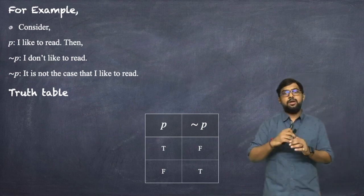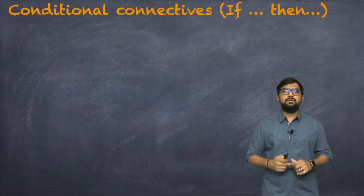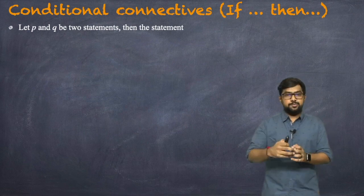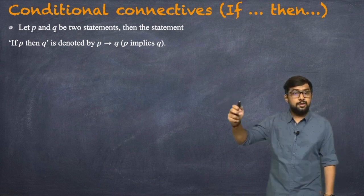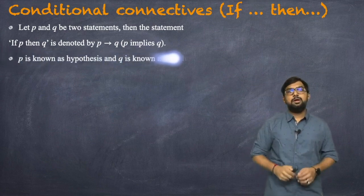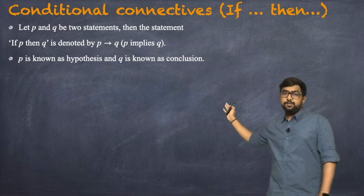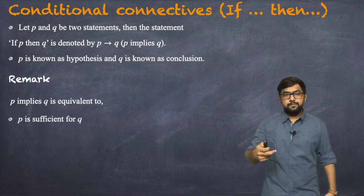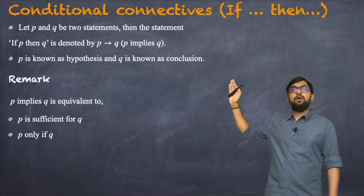The next connective is the conditional — 'if P then Q.' Let P and Q be two statements. The statement 'if P then Q' is denoted by P → Q, meaning P implies Q. The left portion P is known as the hypothesis, and the right portion Q is known as the conclusion.